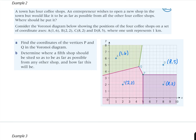P is at the intersection of a horizontal and a vertical line. The vertical line is the perpendicular bisector between B and C — since they have the same Y value, the bisector is vertical. Halfway between x = 8 and x = 2: (8+2)/2 = 5, so that line is x = 5. The horizontal line is the perpendicular bisector between C and D, whose Y coordinates are 5 and 2. (5+2)/2 = 3.5, so the equation is y = 3.5. Therefore, P is at coordinates (5, 3.5).